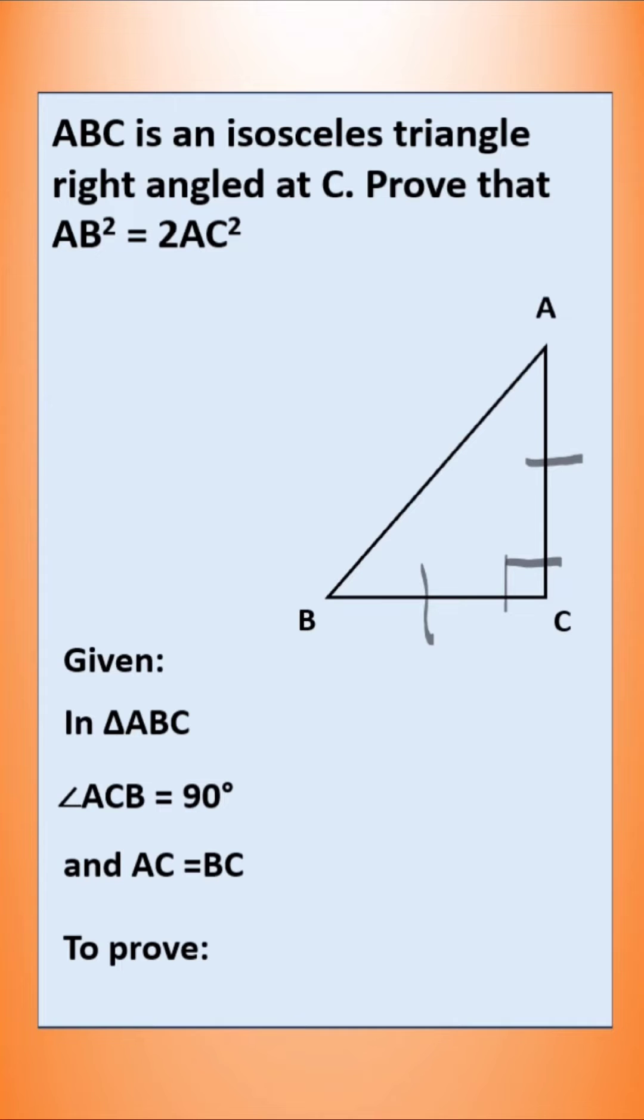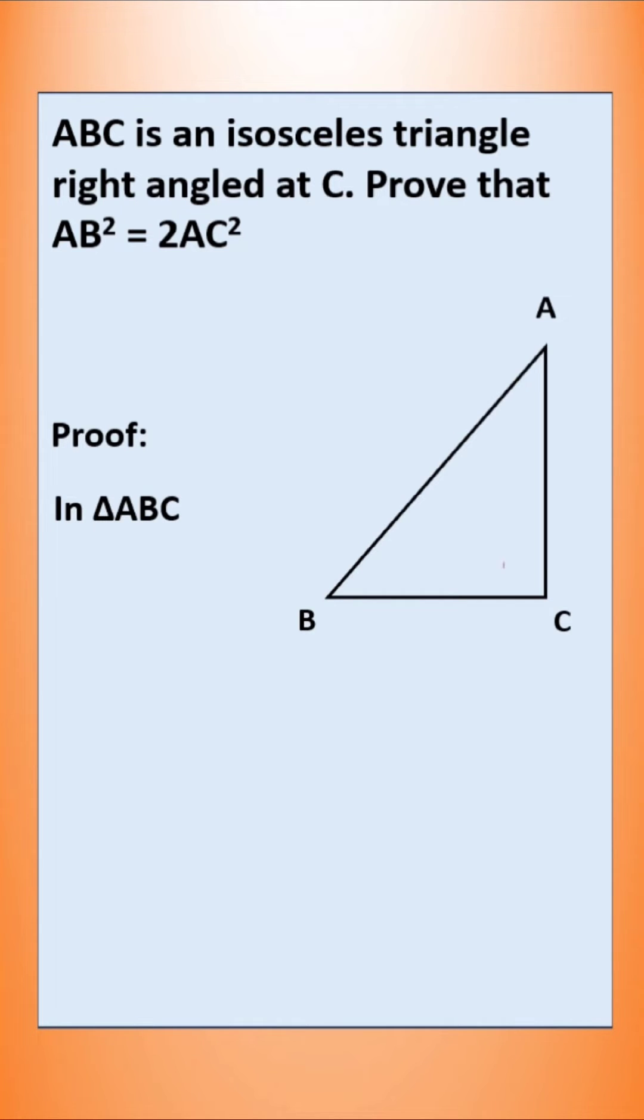Now let us prove. What is to be proved? AB² = 2AC². In triangle ABC, since angle C is 90 degrees, we can write AB² = AC² + BC² by Pythagoras theorem.